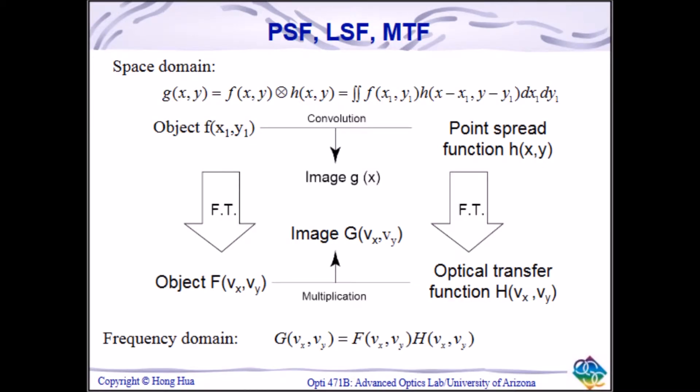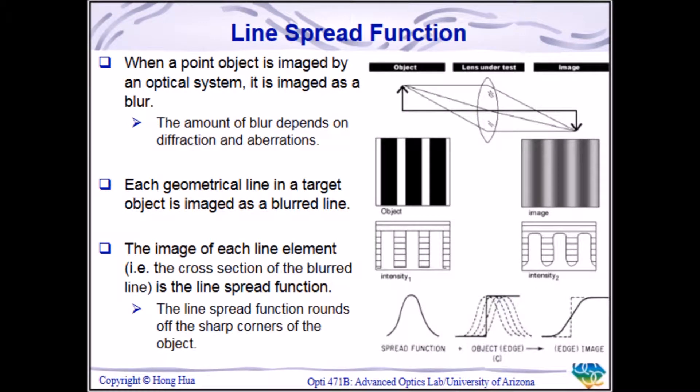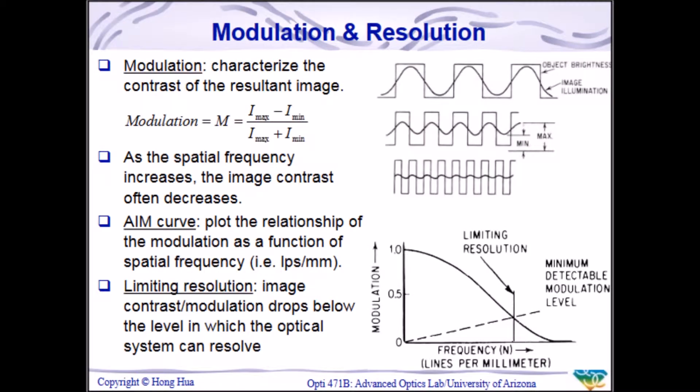For instance, spot diagrams, the point spread function, and line spread function can be used to model, estimate, and describe the image blur of a system, whereas the optical transfer function and resulting modulation transfer function describes the contrast, visibility, or resolution of a system.